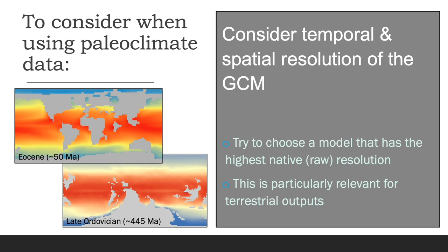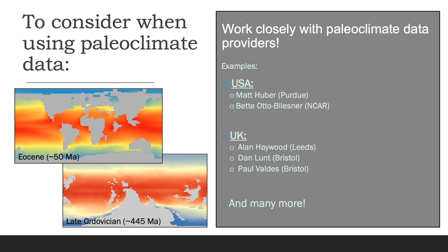As a general rule, you should try to choose a climate model with the highest native or raw resolution, as this is particularly important for terrestrial data — the higher the resolution, the better mountains and other features are represented and therefore the better climate is represented in those areas. Finally, and perhaps most importantly, it's important to work closely with the modelers who actually produce the paleoclimate data. Only by discussing with paleoclimate modelers can the full range of uncertainties and limitations really be appreciated.